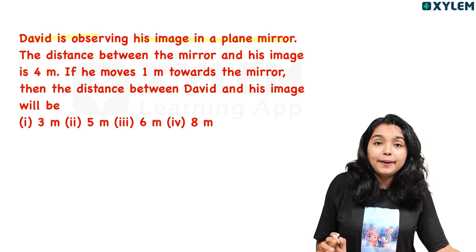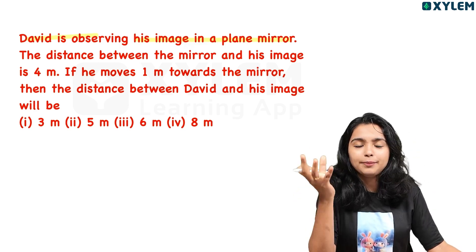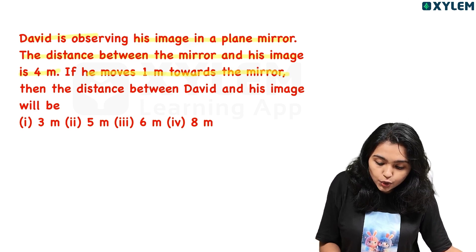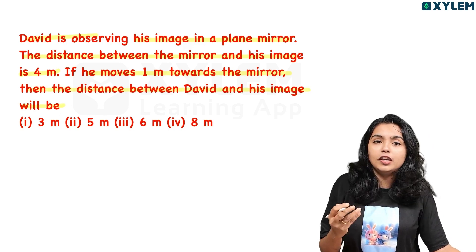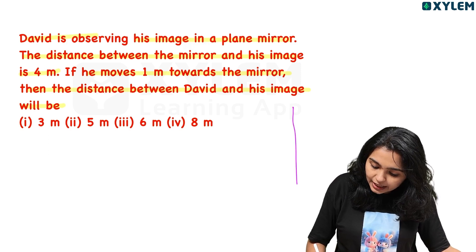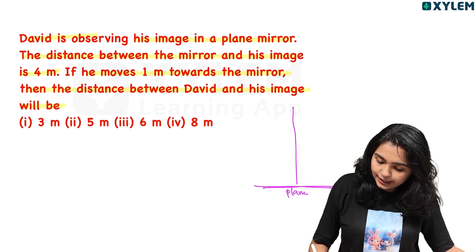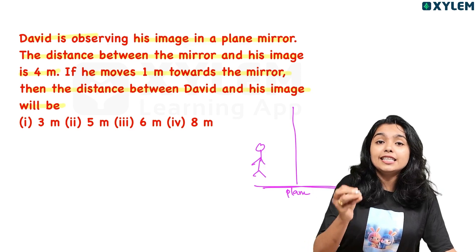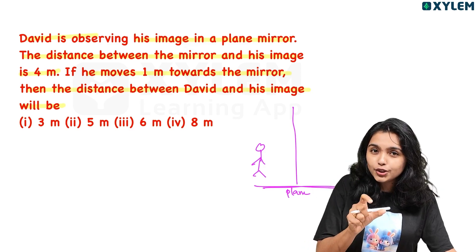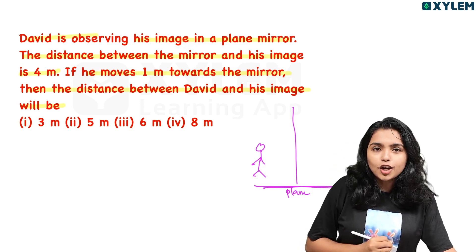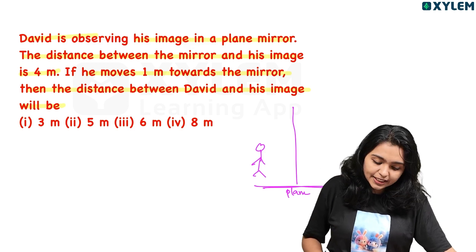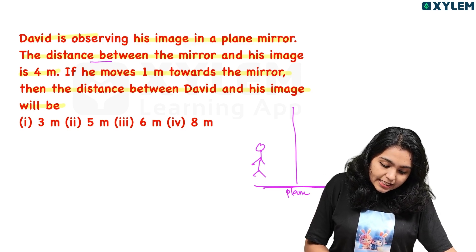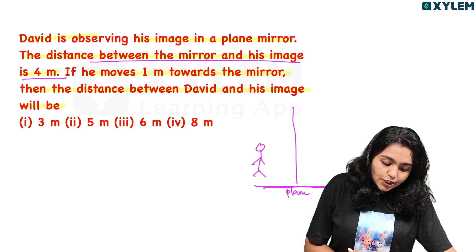David is observing his image in a plane mirror. The distance between the mirror and his image is 4 meters. If he moves 1 meter towards the mirror, then what will be the distance between David and his image? The distance between the object and the mirror is equal to the distance between the image and the mirror.